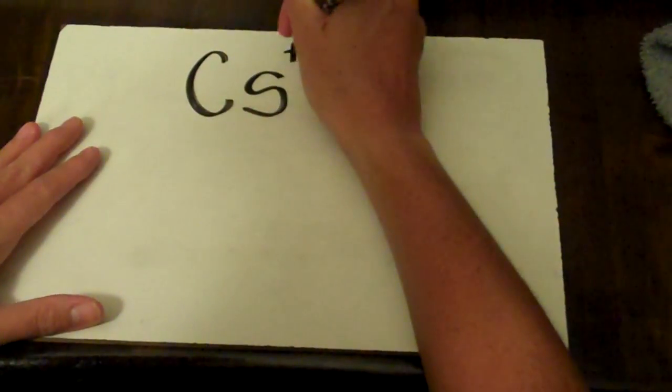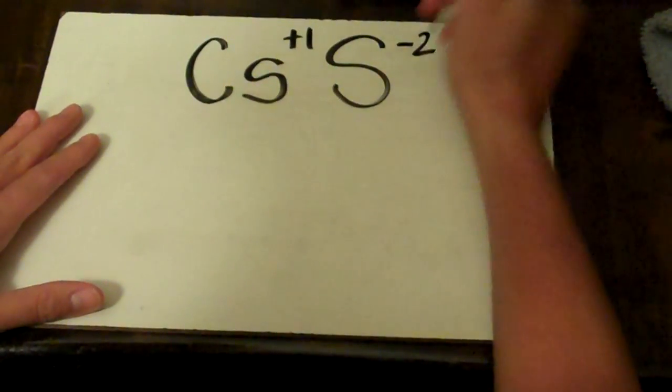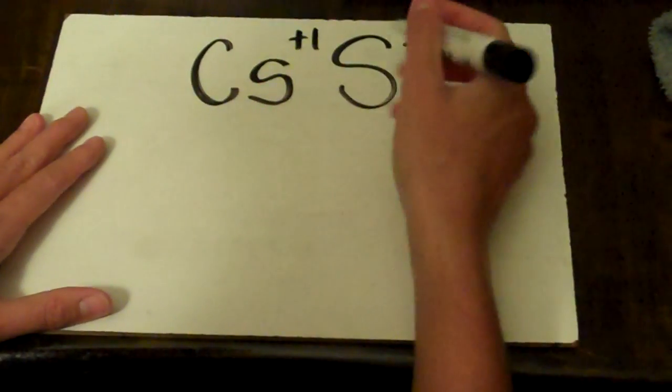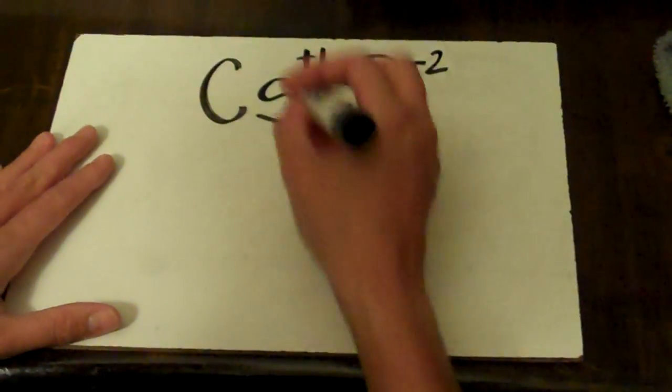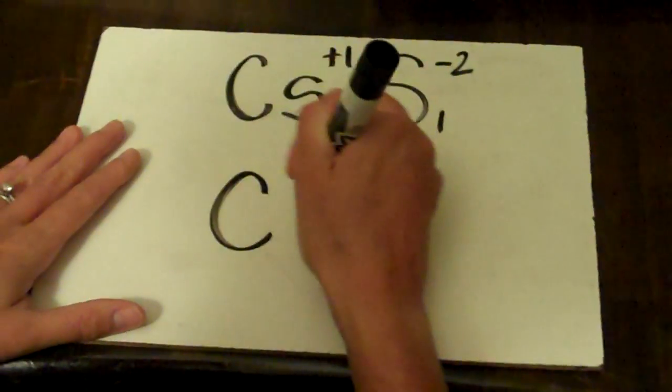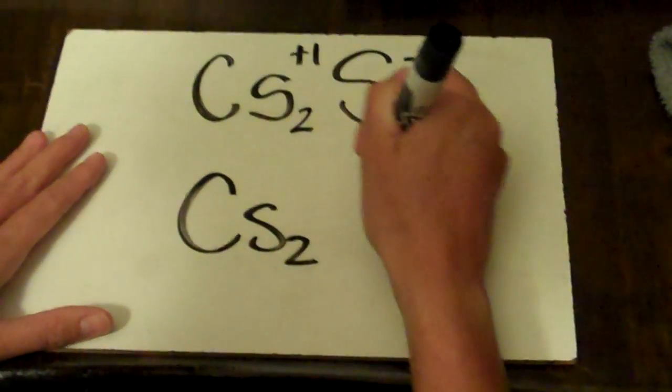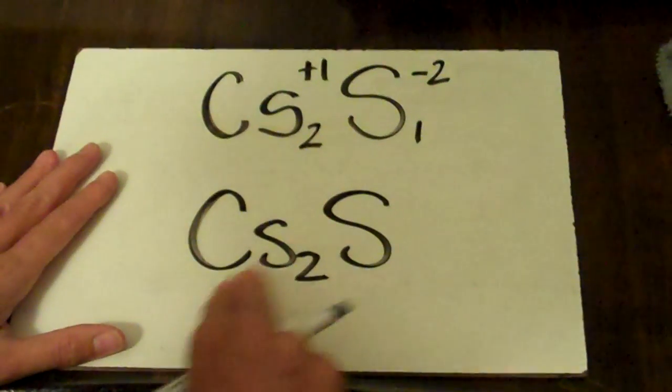So cesium is a plus 1. Sulfur is a minus 2. In order to get this to balance out, I'm going to need a 2 down here and just a 1 down there. Remember what I said about the ones. We can just leave them alone.